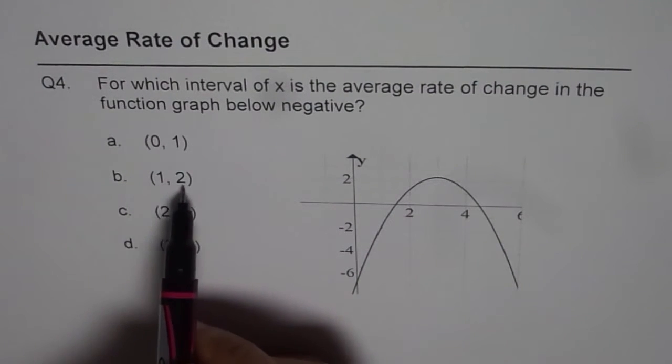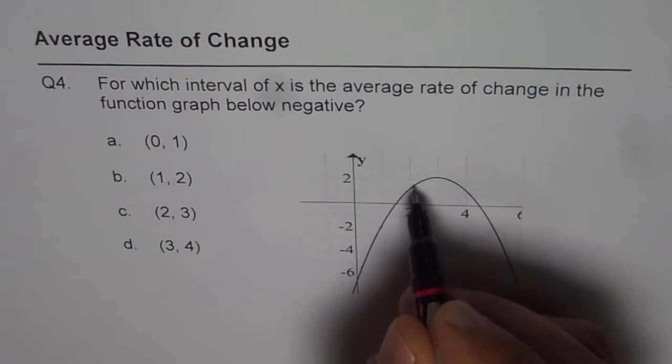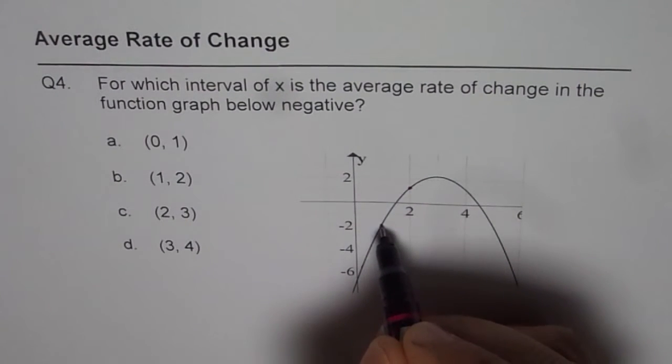In the next interval, which is from 1 to 2, that is from here to here. Here again, if I connect these two points with a straight line, I get a secant line with positive slope. So the average rate of change is positive.